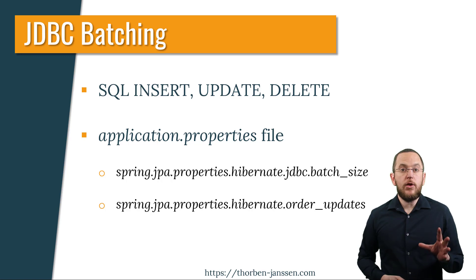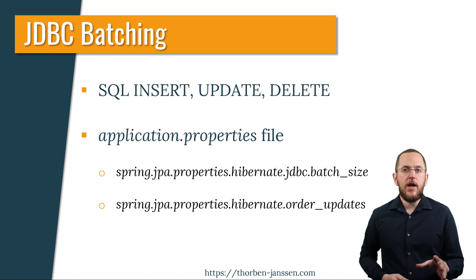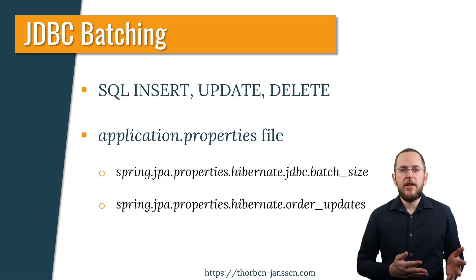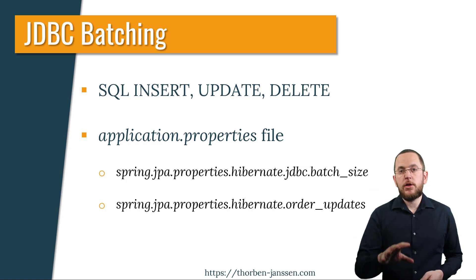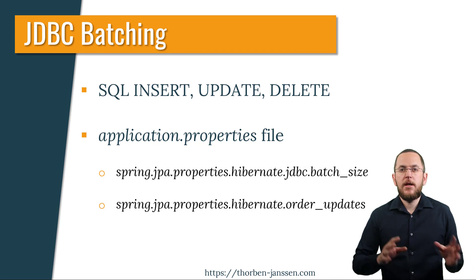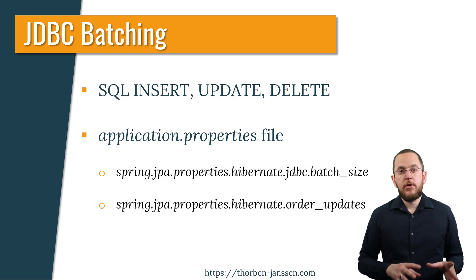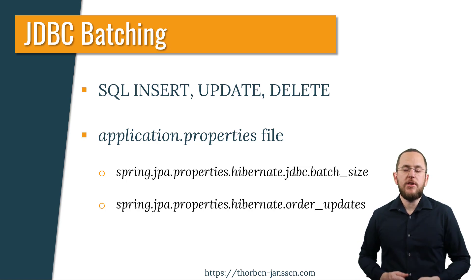You should also set the property spring.jpa.properties.hibernate.orderUpdates to true, which tells Hibernate to order the statements before executing them. Ordering the statements ensures that Hibernate executes all identical update statements that only differ in the provided bind parameter values after each other. That's important because the JDBC driver closes and executes the batch when you perform a different statement — for example, an update on a different database table. By ordering the statements, you enable the JDBC driver to group them in a JDBC batch and use the configured batch size as efficiently as possible.